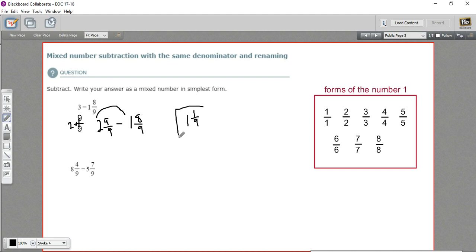Let's take a look at this one down here. It looks slightly more complicated. We have 8 and 4/9 minus 5 and 7/9. One of the problems here is that if I just tried to do the fraction part, I'd have 4 minus 7, which would give me a negative number. So this one needs to be bigger than this one. I can do that.